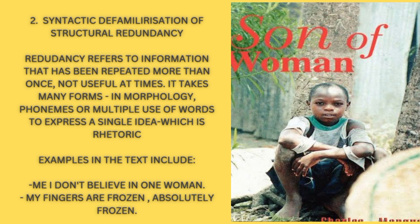Number two: syntactic defamiliarization of structural redundancy. Redundancy refers to information that has been repeated more than once — not useful at times. It takes many forms in morphology: words, phonemes, sounds, or multiple use of words to express a single idea, which is rhetoric. Examples in the text include: 'Me, I don't believe in one woman,' 'My second one,' and 'My fingers are frozen, absolutely frozen.'